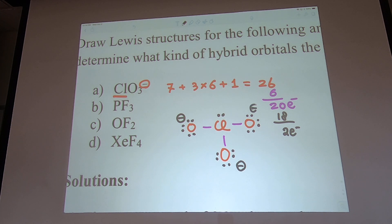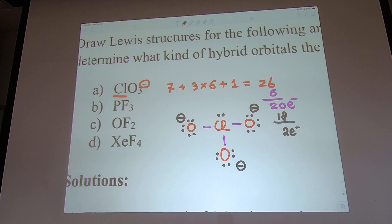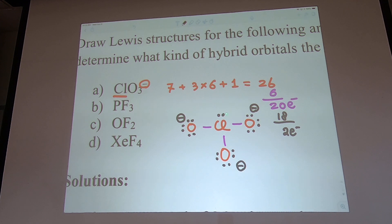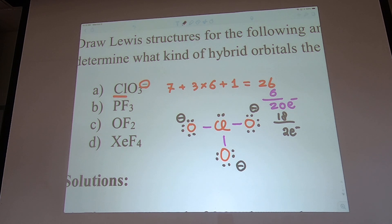Now let's check formal charges. For chlorine in the center, using the shortcut: 7 − 2 − 3 = −3 from the oxygens contributing −1 each, so chlorine must be +2. That's a high formal charge, so we need to delocalize.